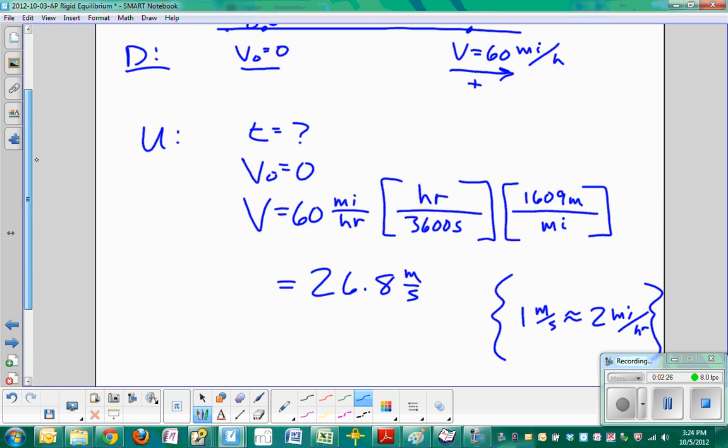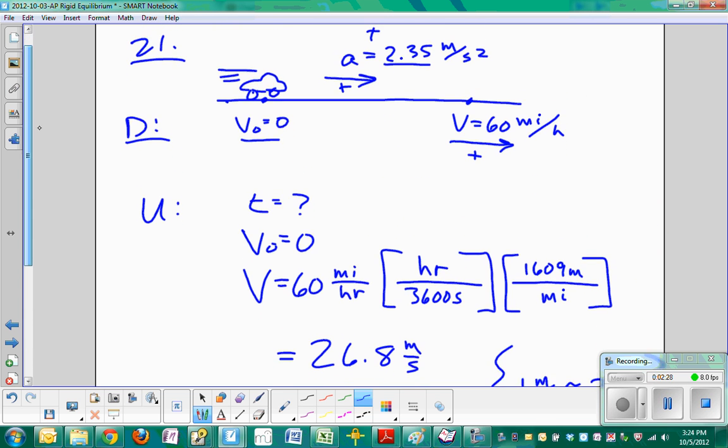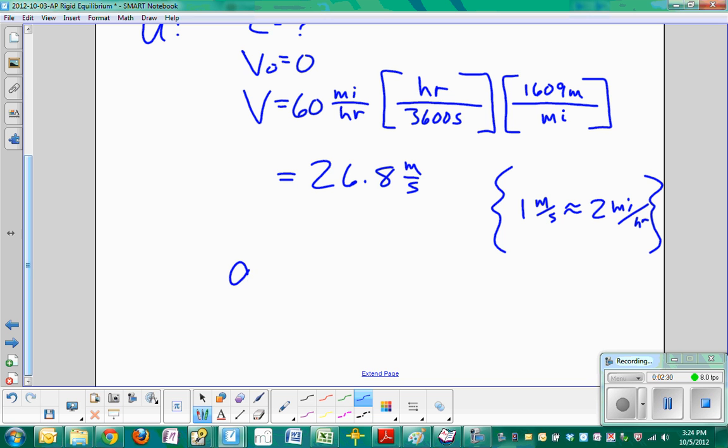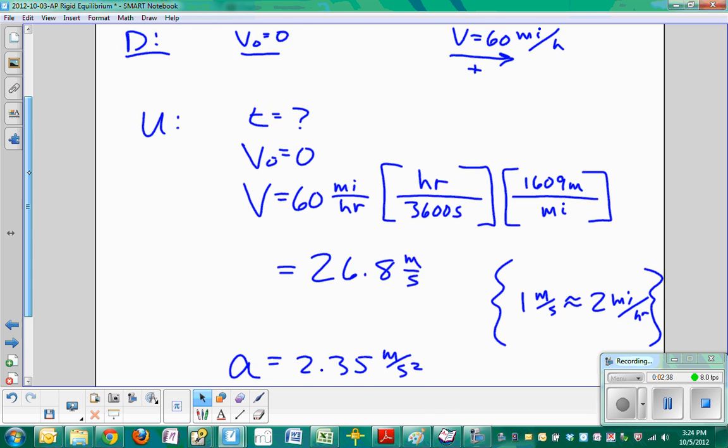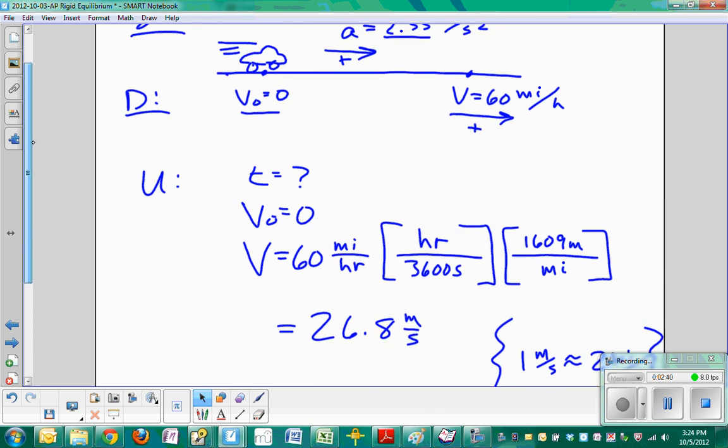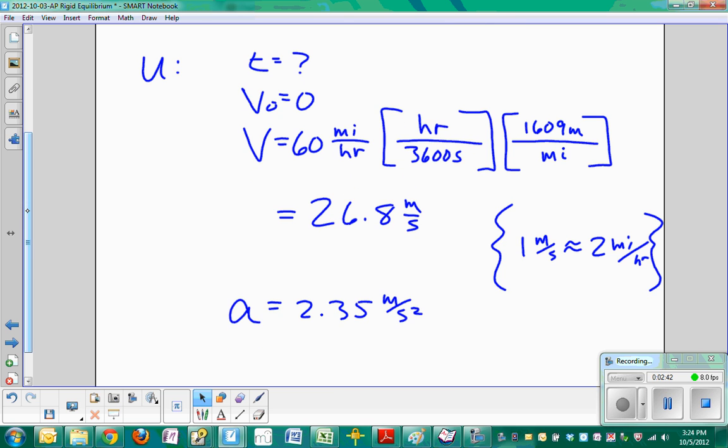And then the last thing that we're given is our acceleration. So we have an acceleration of 2.35 meters per second squared. As always, what we don't have in here is the thing that's probably going to tell us which relationship we're going to use. We have time. We have initial velocity. We have final velocity. And we have acceleration. What is it that we're missing? Delta X.